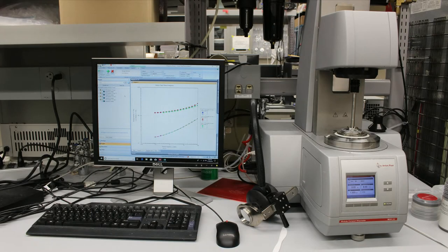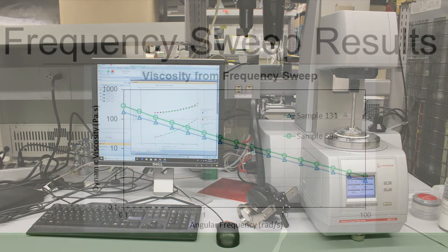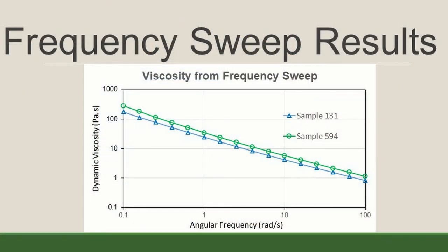Lastly, we ran a frequency sweep on the Anton-Parr 302 rheometer to determine the dynamic viscosity and the sample's viscoelastic behavior. This test increases the frequency, or how often a constant strain was applied to the sample. With this graph of dynamic viscosity against angular frequency, we can see that sample 594 still has a higher viscosity than sample 131, which is in accordance with the other viscosity readings we have been seeing throughout this video.